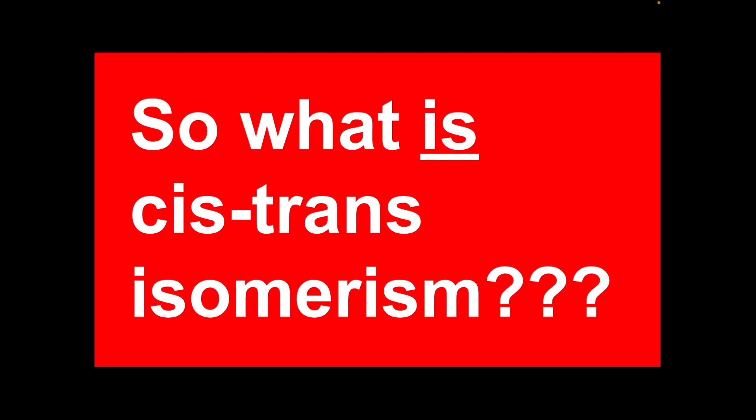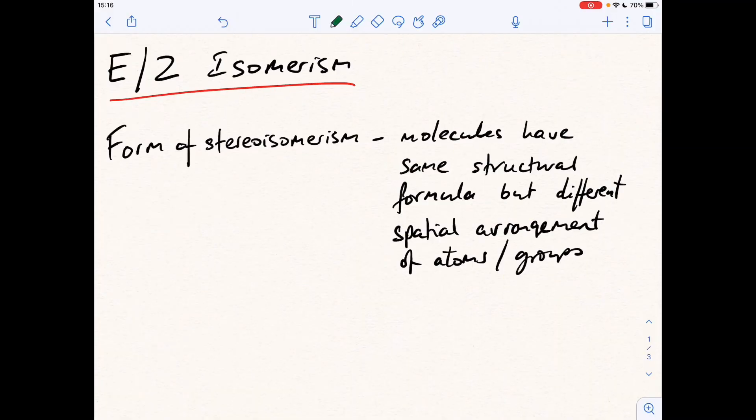So the first thing we'll look at is E/Z. E/Z isomerism is a form of stereoisomerism, and the definition for stereoisomerism is when you have molecules that have the same structural formula but a different spatial arrangement of atoms or groups.